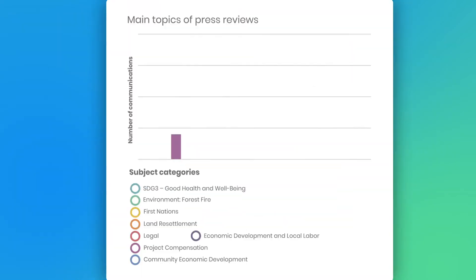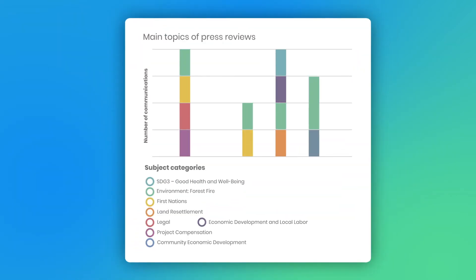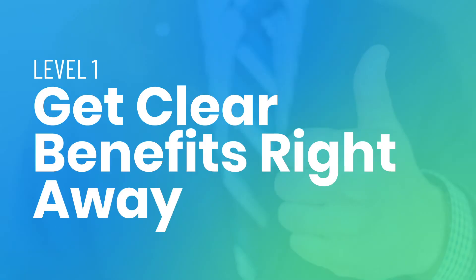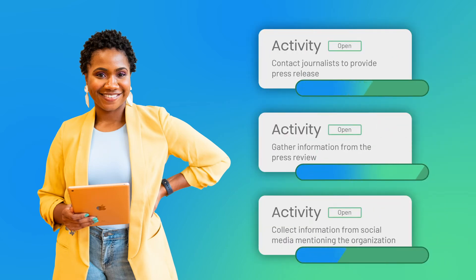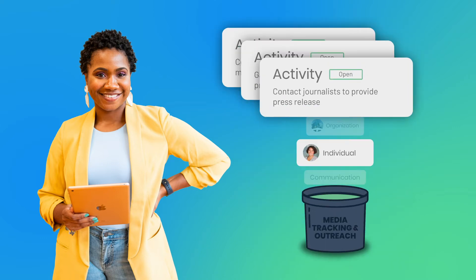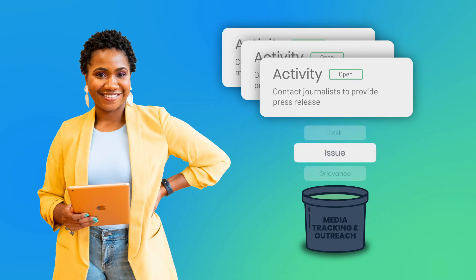What's even better is that it can evolve as you use it. Jessica needs to run a media campaign. Her team will contact journalists to present them with a press release, gather information from the press review, and collect information from social media that mentions their organization. To keep track of these activities, Jessica created an engagement plan called Media Tracking and Outreach.